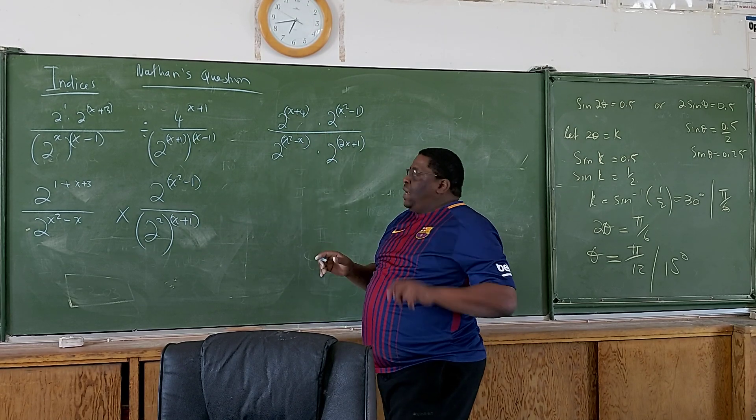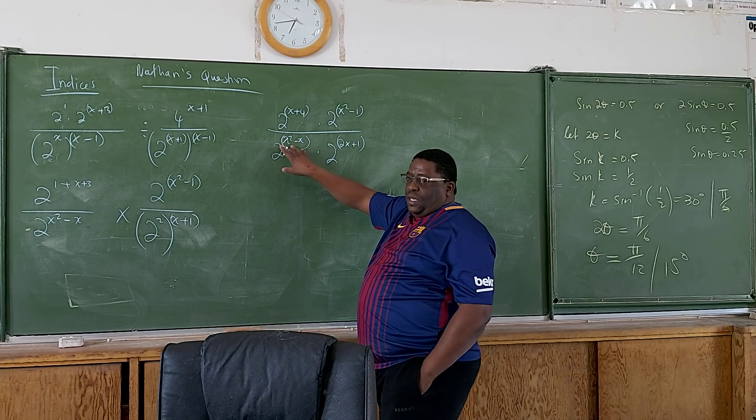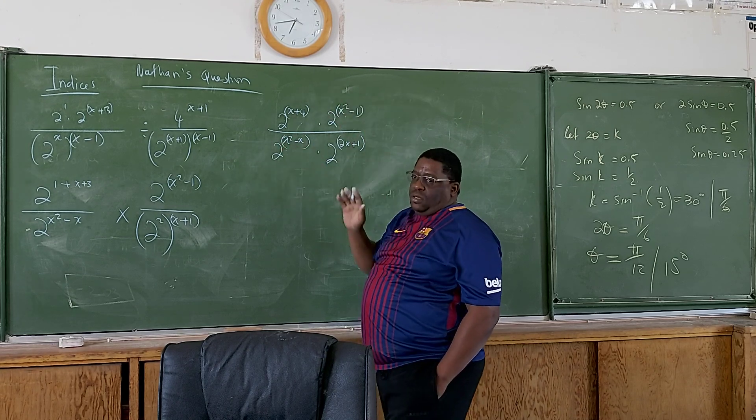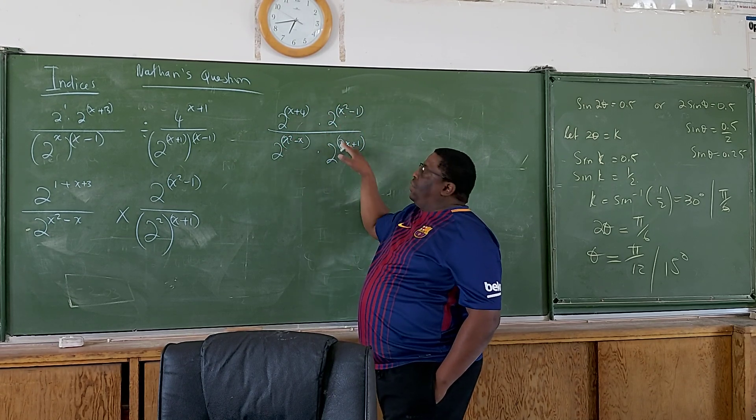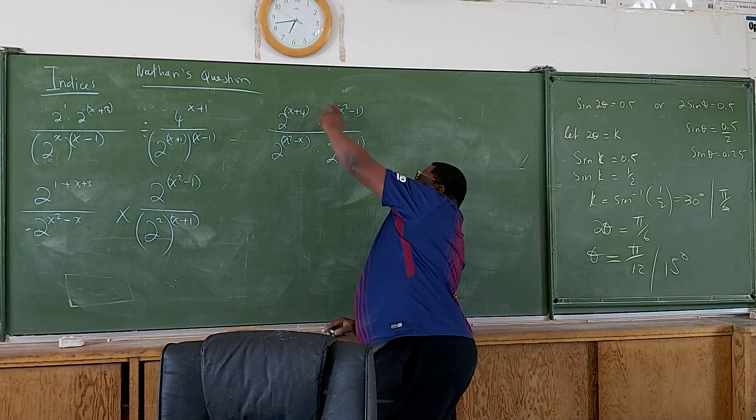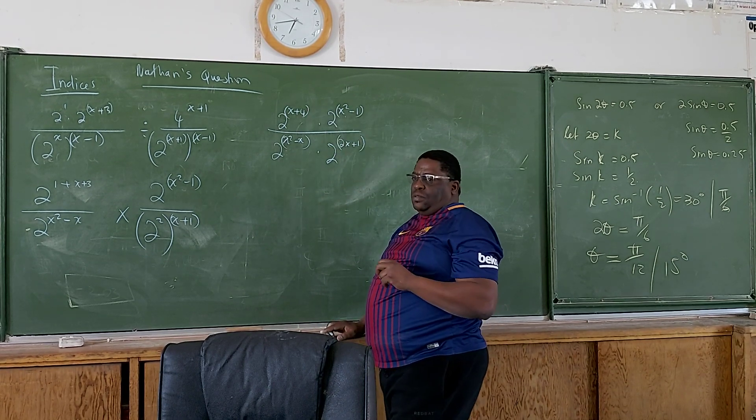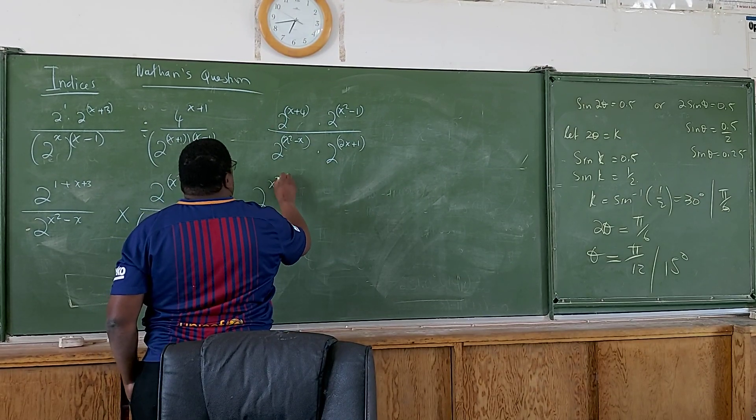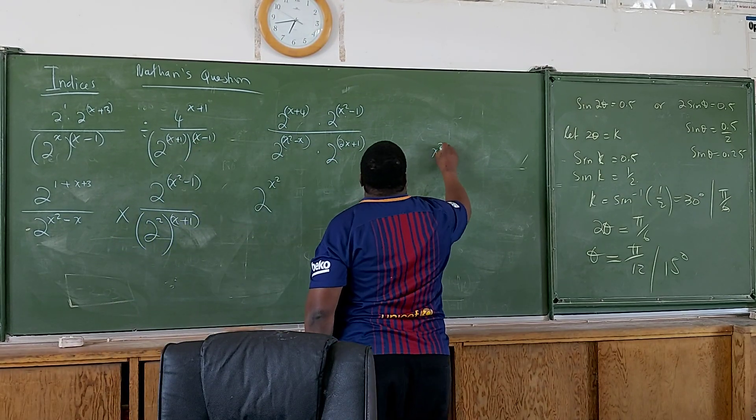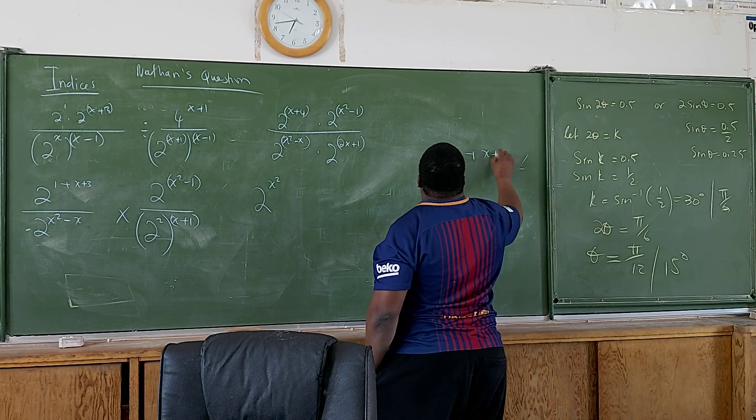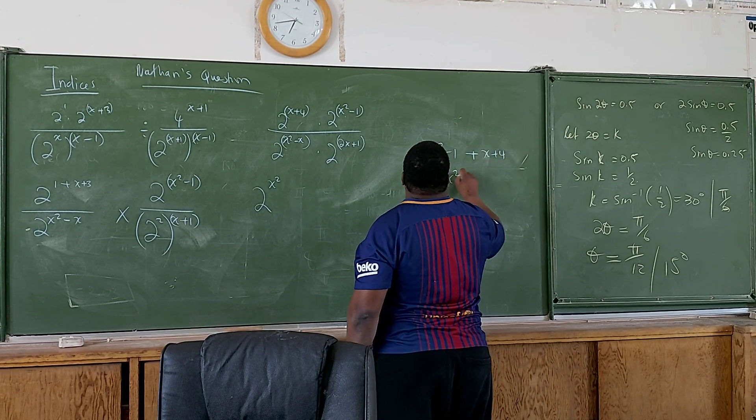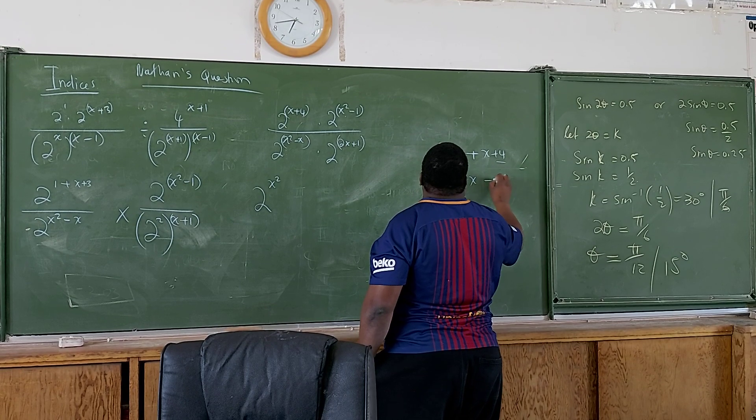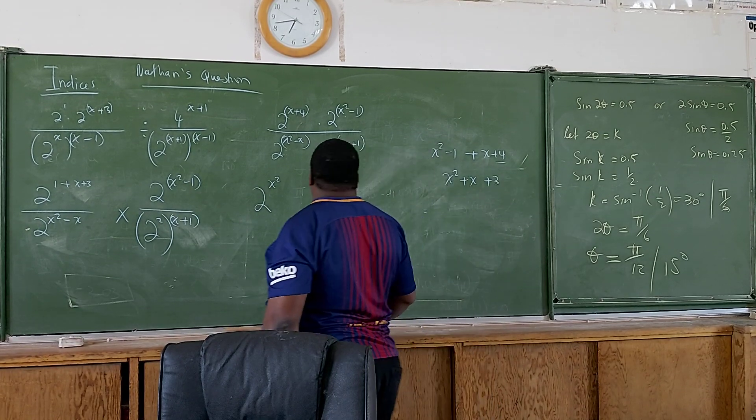this is just one term over one term. There are no pluses or minuses. So if I had exactly the same thing here and there, I would be cancelled. But I can't because there is not the same. So on top, I will add the indices. So that becomes 2 raised to the power of x squared. So maybe you need to do it on the side so you can get the concept.